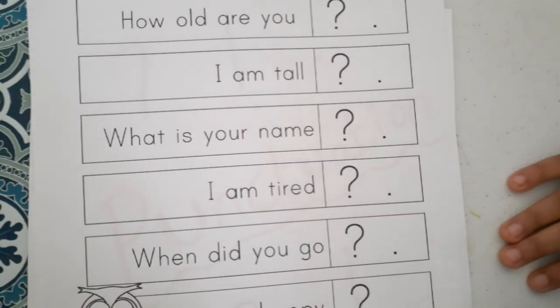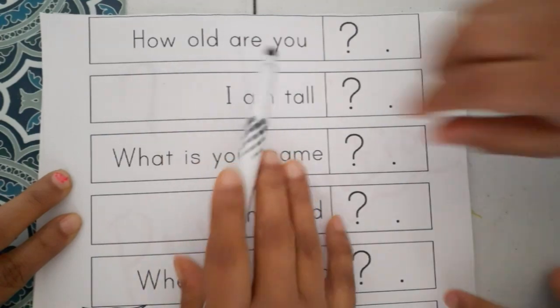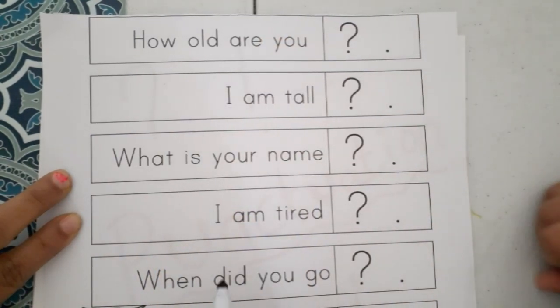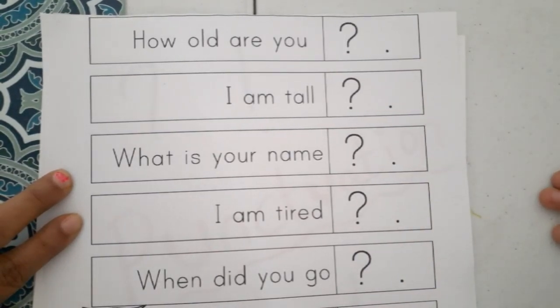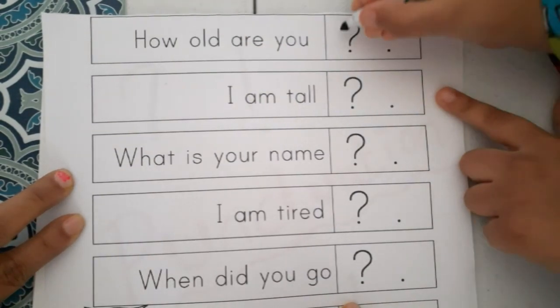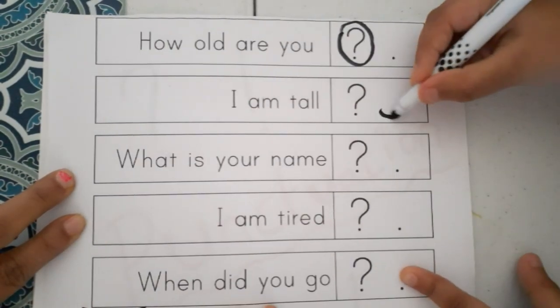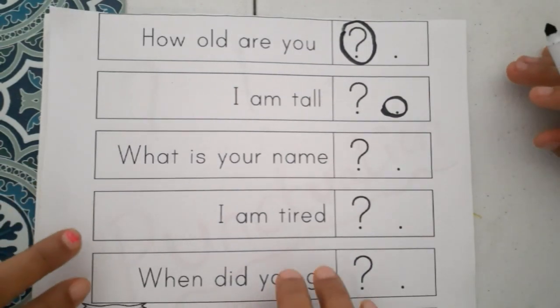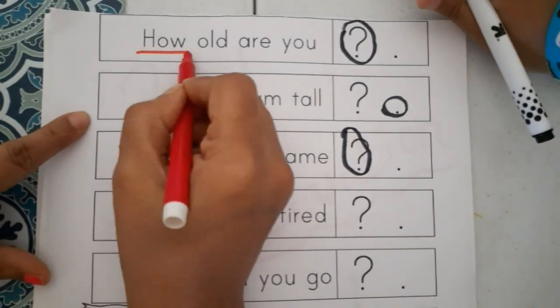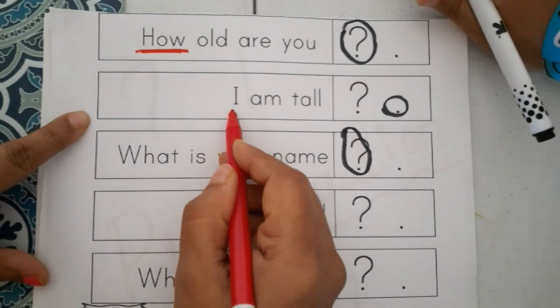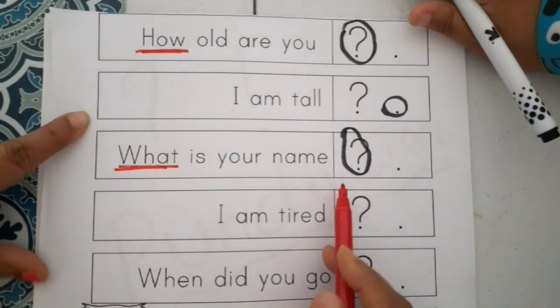How old are you - is it asking a question or telling an answer or showing excitement? Question. I am tall - it's an answer, so it's a period. What is your name? There's a question mark. I am tall is the answer, so it is period. What is that? Question mark.